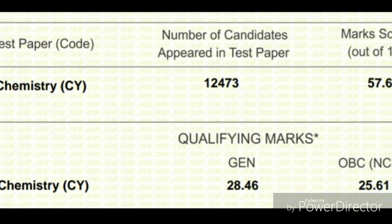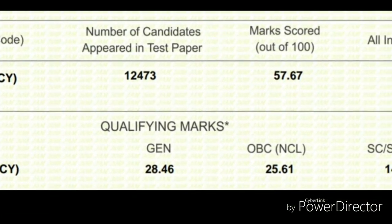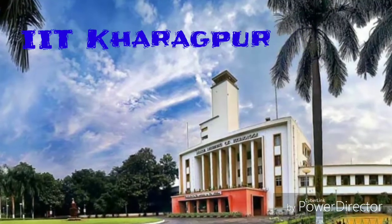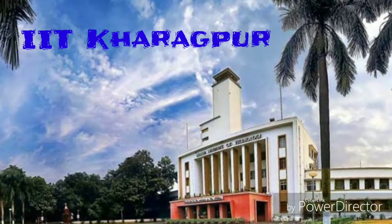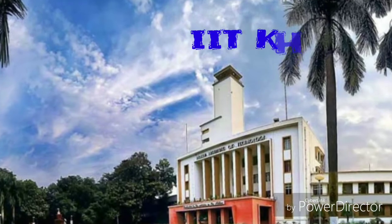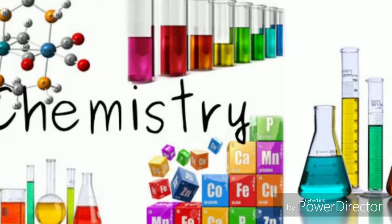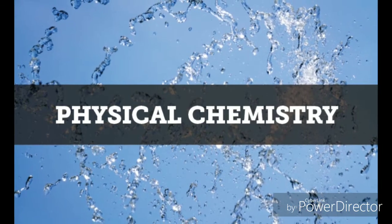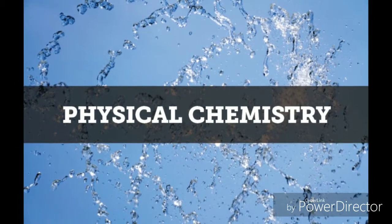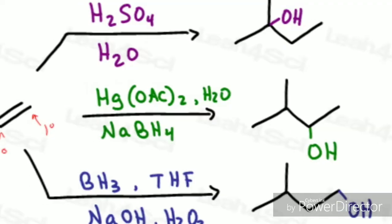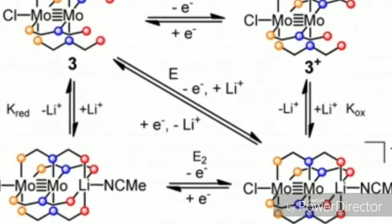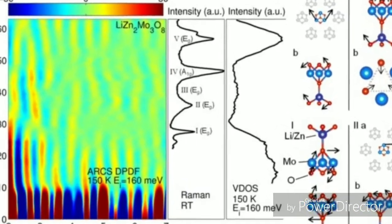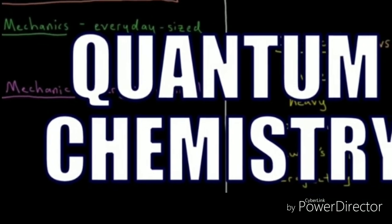Then they asked about my IIT JAM rank and which IIT I got after counseling. I told them all. Finally they asked which part of chemistry I like the most. I said physical chemistry. If you love or can answer well the organic or inorganic part, then tell them that. I also said that I am interested in quantum chemistry especially.